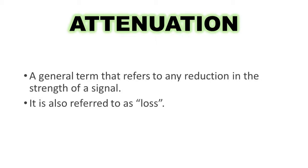Attenuation is a very important word when it comes to properly setting up any cellular signal booster. But what exactly is attenuation? Attenuation is a general term that refers to any reduction in the strength of a signal. It is also referred to as loss. So how does a reduction in signal help us ensure that a signal booster will work at its best?